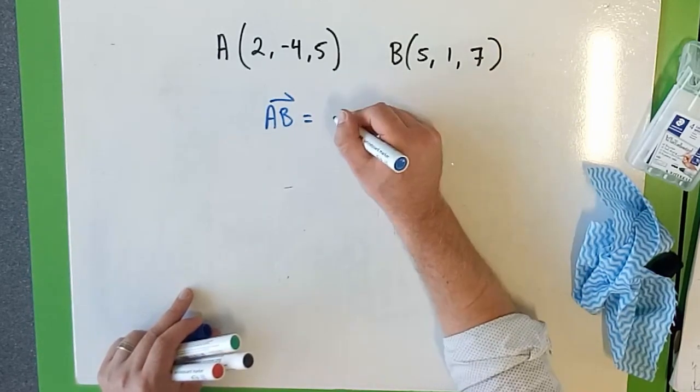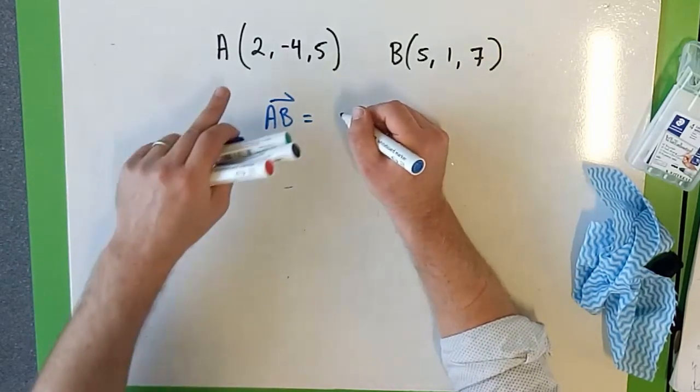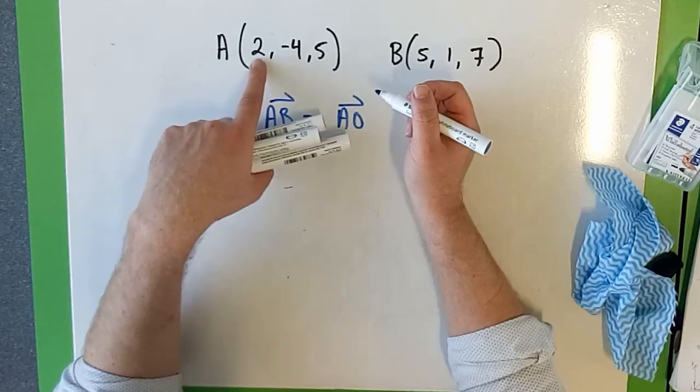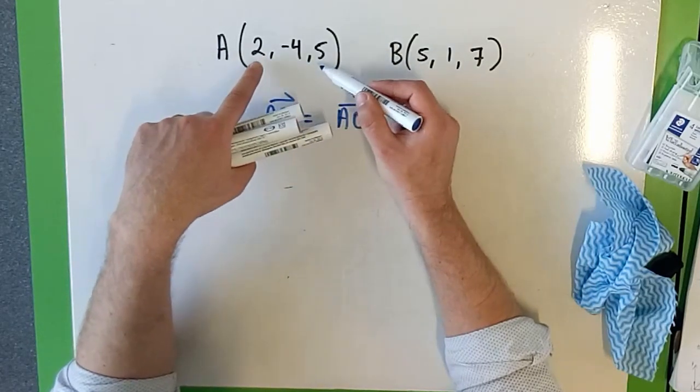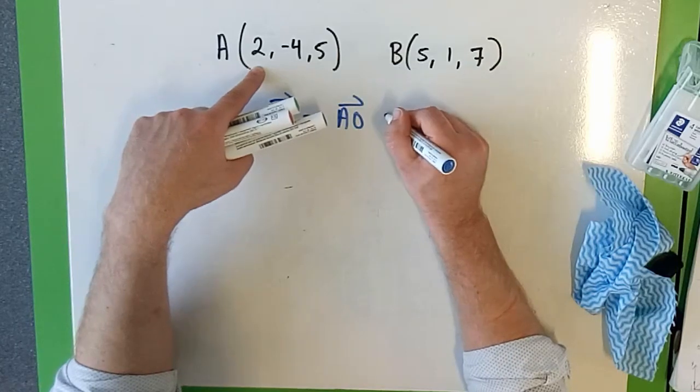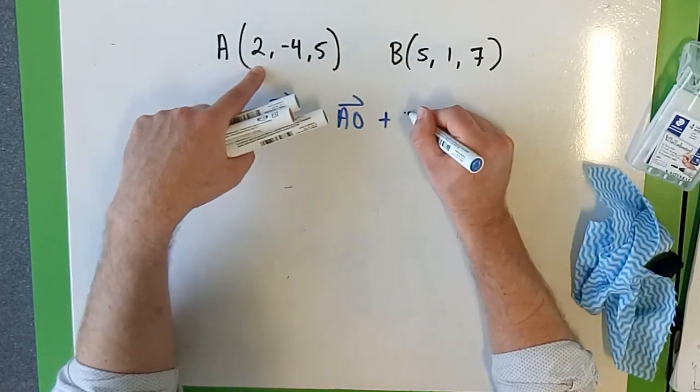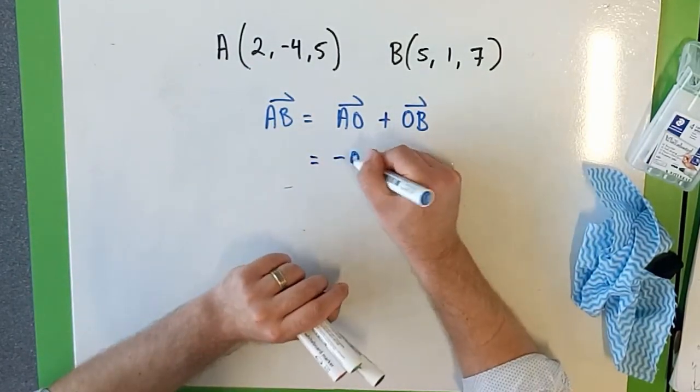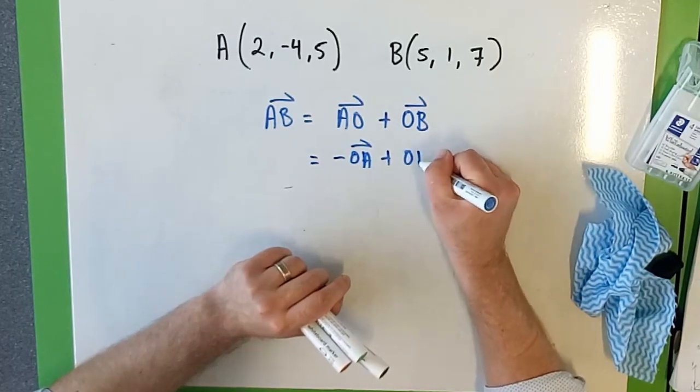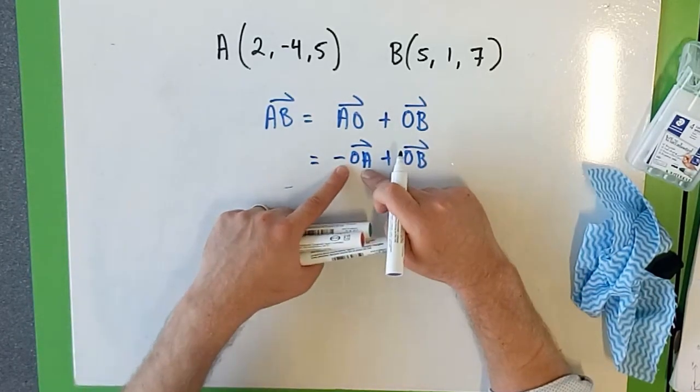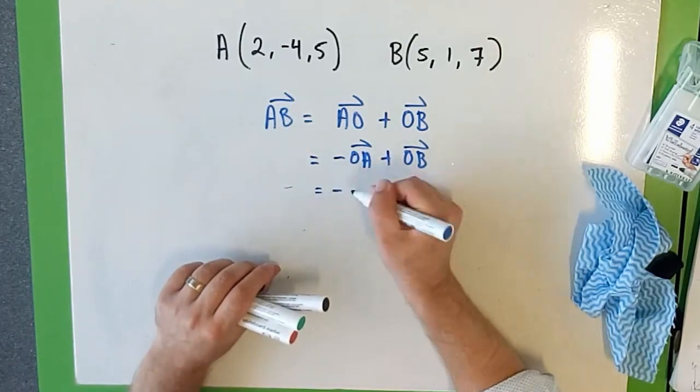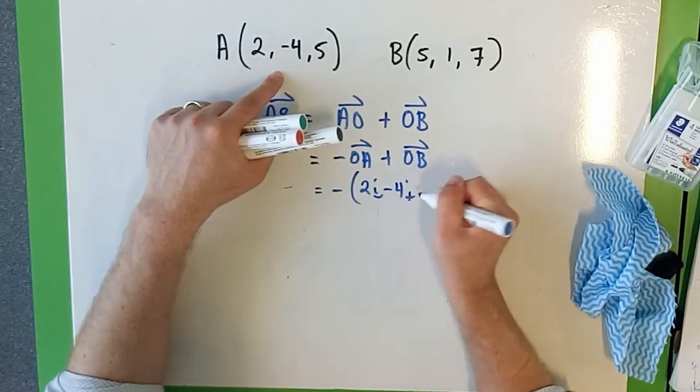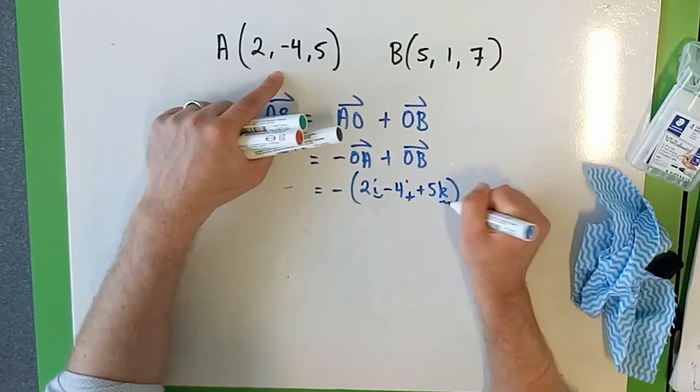The line AB is going to equal, well, I want to go A to O. So this is O to A, really, going from O to A, so this is the point A. And then plus O to B. So I want the negative of O to A, plus O to B. Flipping the letters around makes this a negative, it's going in opposite directions. So negative O to A, so this is O to A, is 2i minus 4j plus 5k.